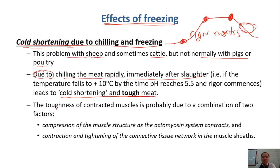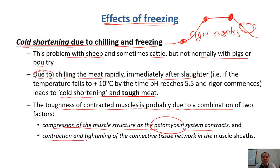This toughness of contracted muscles is probably due to a combination of two factors: compression of the muscle structure when the actomyosin system contracts, and contraction and tightening of the connective tissue network surrounding the muscle bundle and surrounding the fiber — remember the structure of muscle we discussed before. If we chill too fast at this stage, we get cold shortening.